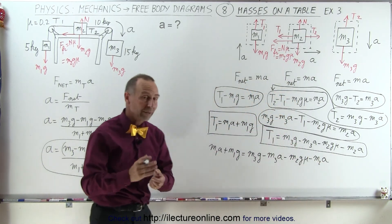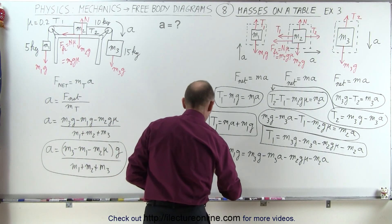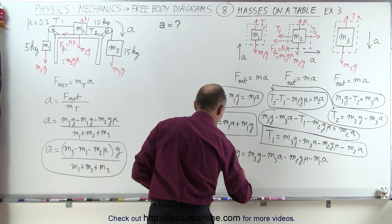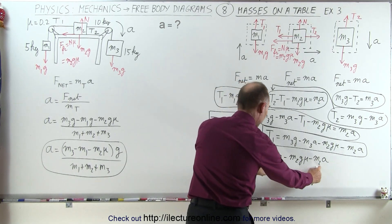And now we're going to move all the terms that have an a in it to the left, everything else to the right. So that gives us M1a plus M2a plus M3a equals, because when we move those over, they'll become positive.